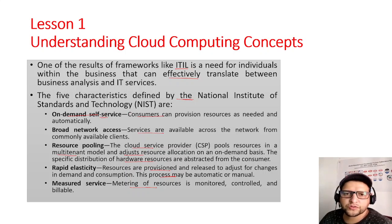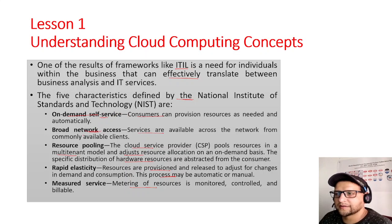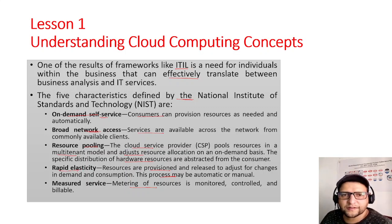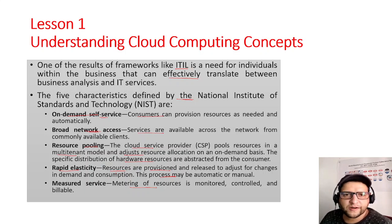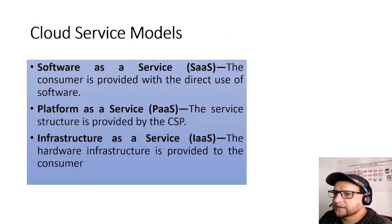On-demand means the service is provided to you as needed and it happens automatically — you just go to your account and create a resource without contacting a person. Broad network access means services are available from your PC, laptop, smartphone, or tablet. Resource pooling gives you an overview of all resources in your account. Rapid velocity is like elasticity — you stretch or release resources as required. Metered service means there's a meter checking your usage and you pay only for what you use.